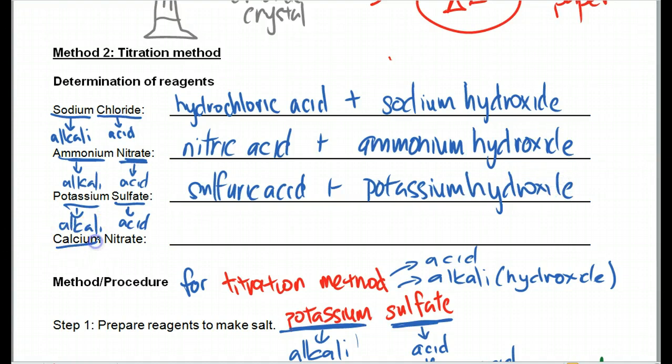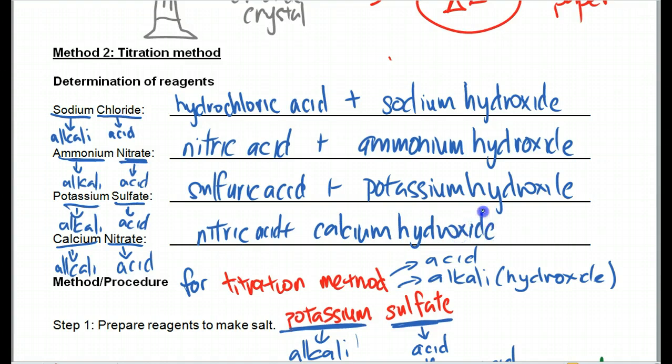And lastly, we have calcium nitrate. So calcium nitrate, nitrate will be the acid. Calcium will be the alkali. So we have nitric acid plus calcium hydroxide. These are the reagents just to prepare all of these salts over here. So just remember, titration is a method used between the reaction of an acid and alkali to produce the salt.